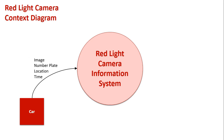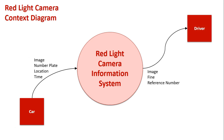The system processes all this data to find out who the driver is. The other external entity is the driver — they find out who the driver is and send them a copy of the photo, the amount of money they're going to have to pay as part of their fine, and whether they've lost demerit points on their license. They're also given a reference number, which they need if they want to rebut the fine and say it was an error.